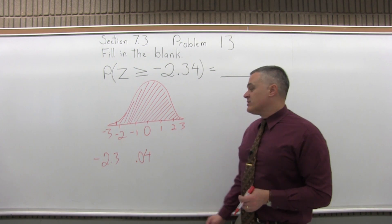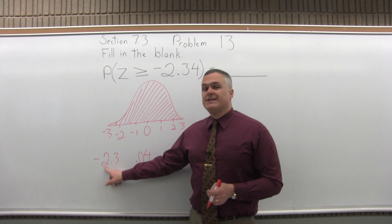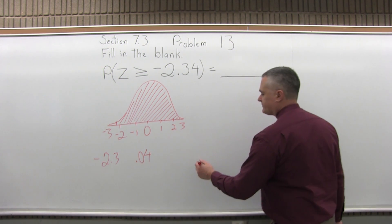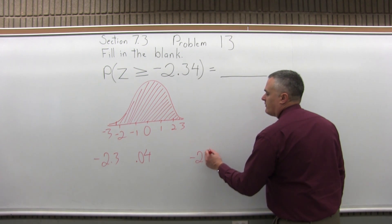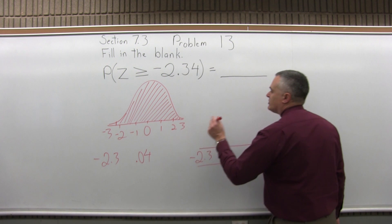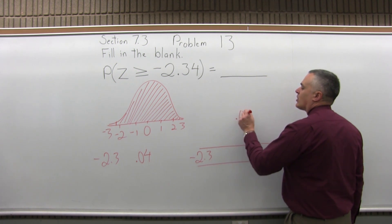And now what we do is go to the standard normal chart. We look in the negative 2.3 row—make sure you notice the negative—and we follow that out until we are under the 0.04 column.